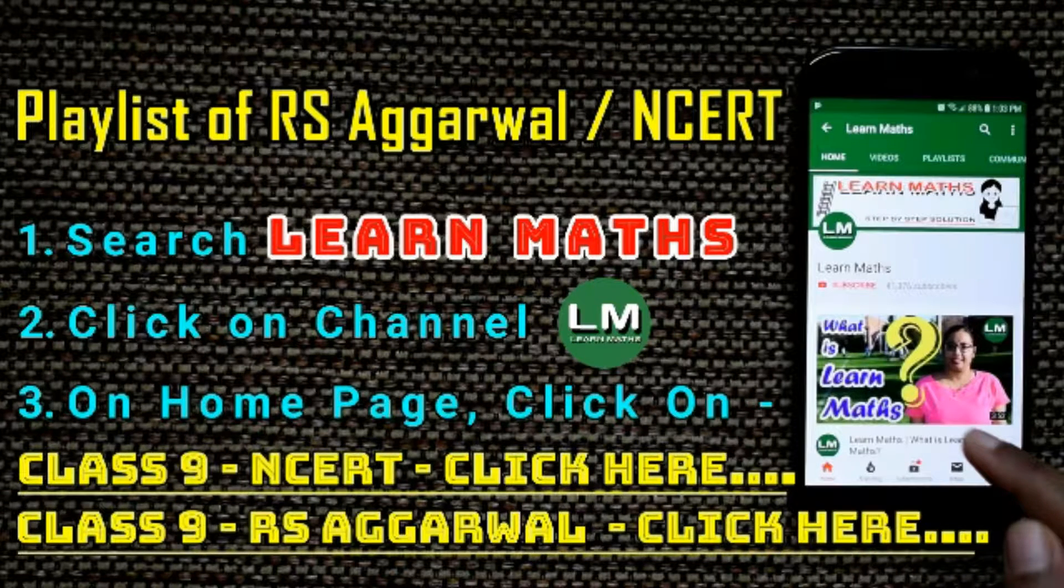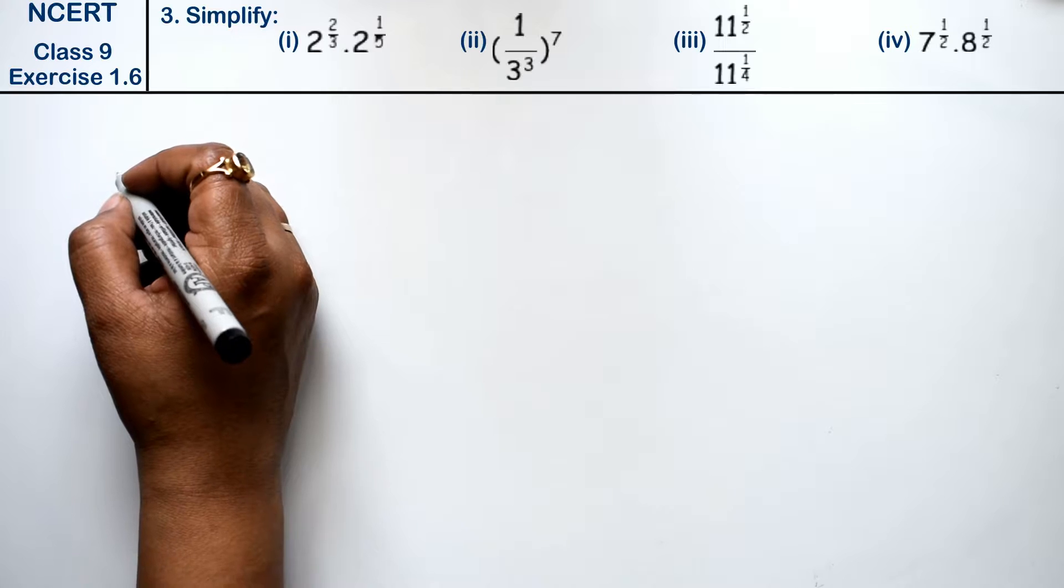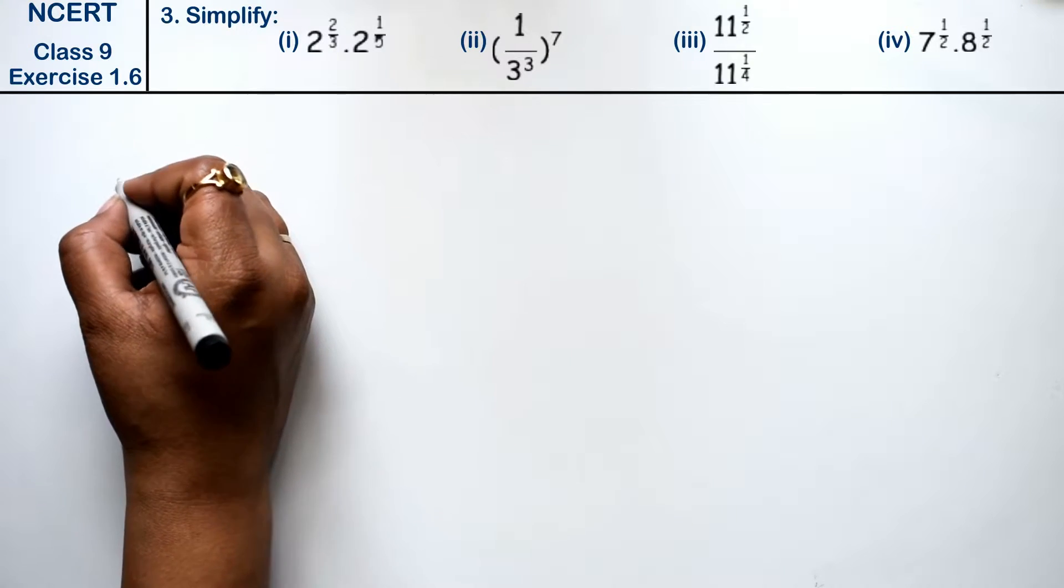Let's do question number third of exercise 1.6, that is number system. Question number third is simplify.